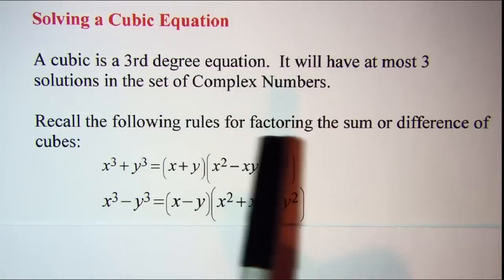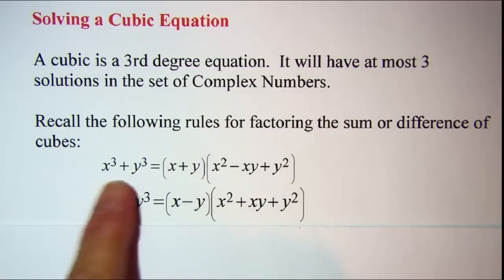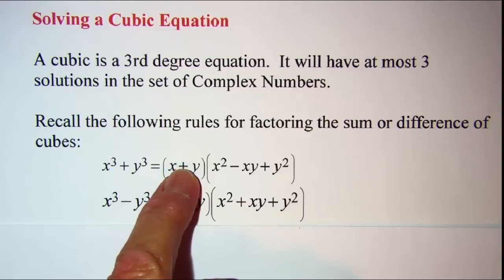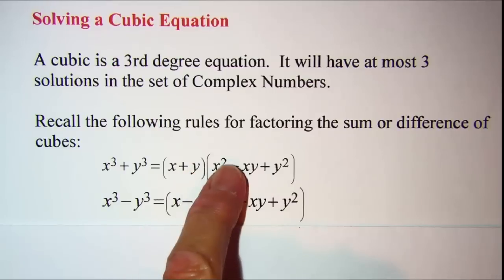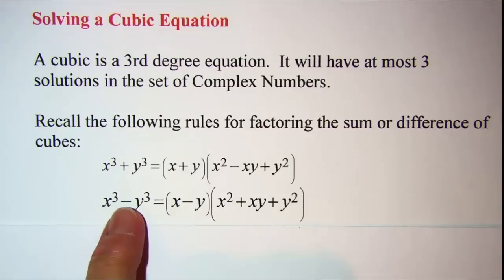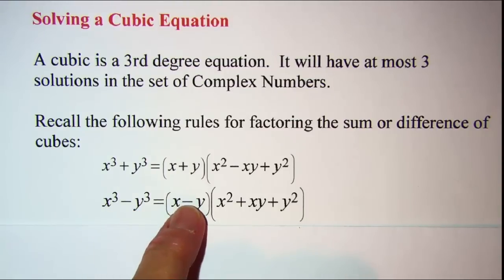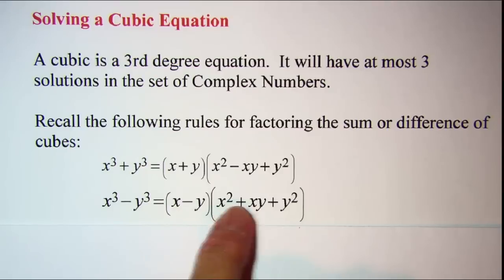Now recall the following rules from factoring the sum or difference of cubes. If you have the sum of cubes, you'll use the plus sign in the binomial up front and then you're allowed one minus sign, so it will appear in the middle and then the other term is plus. If you have a minus between the cubes then the minus sign will appear in the binomial and you'll have pluses in the two remaining positions.